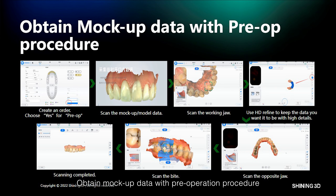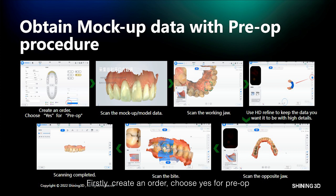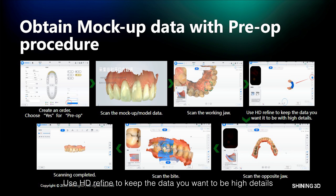To obtain mock-up data with the pre-operation procedure: firstly, create an order and choose yes for pre-operation. Then scan the mock-up or the model data and scan the working jaw. Use HD refine to keep the data you want in high detail. Then scan the opposite jaw and bite.